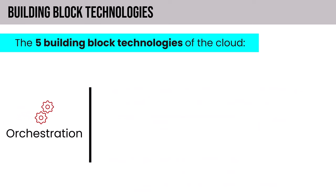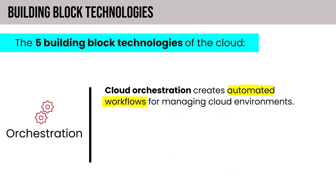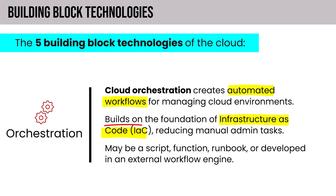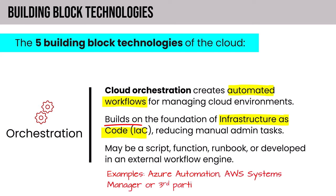Orchestration is the fifth building block. Cloud orchestration creates automated workflows for managing cloud environments, building on the foundation of infrastructure as code and reducing manual administration tasks. Orchestration may be a script, a function, a runbook, or developed in an external workflow engine. Examples include Azure Automation, AWS Systems Manager, or third parties like Zapier that integrate with hundreds of services and multiple cloud platforms.